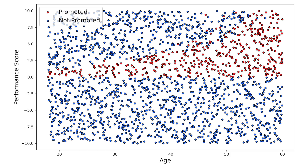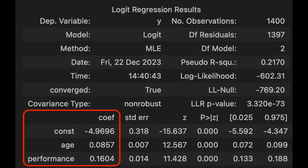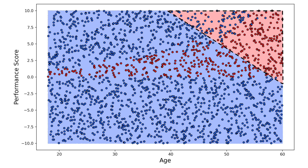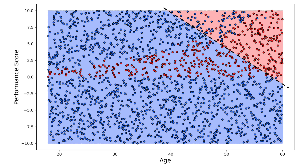We can get a better understanding of what's happening by visualizing the decision boundary of this regression model. It is created by plotting the model's prediction for every age-performance pair across the entire feature space. The pink and blue areas are where the model predicts a promotion probability of above or below 50% respectively. Looking at the decision boundary, we can see that the model is doing a terrible job. Around half the promotion predictions are not true promotions — that is poor precision. It also misses most of the promoted employees — poor recall. The problem is that the model's decision boundary is a straight line, demonstrating that logistic regression is a linear classifier.